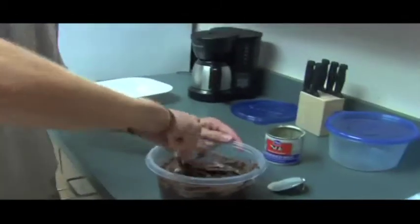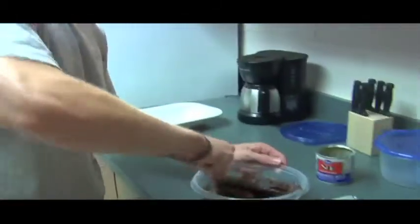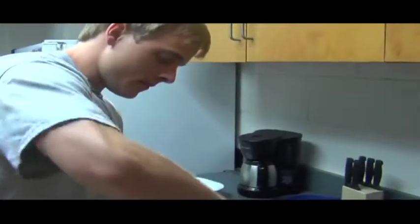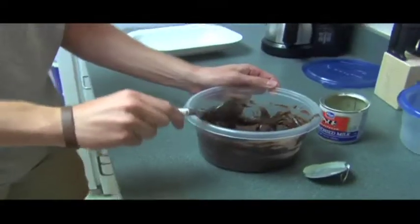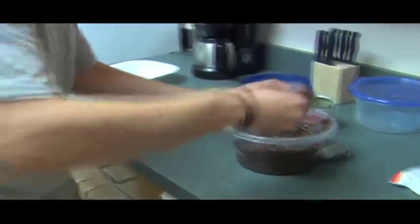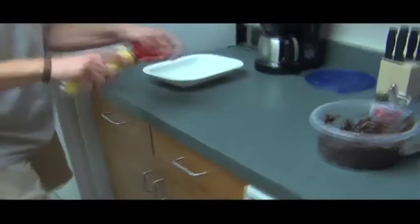One thing you want to look for with this is you want it to be thick and creamy. That looks really good. What we're going to do now, we're going to get an eight-inch pan. We're going to spray the pan so it won't stick. Just give it a good spray. We're just going to pour this in here.